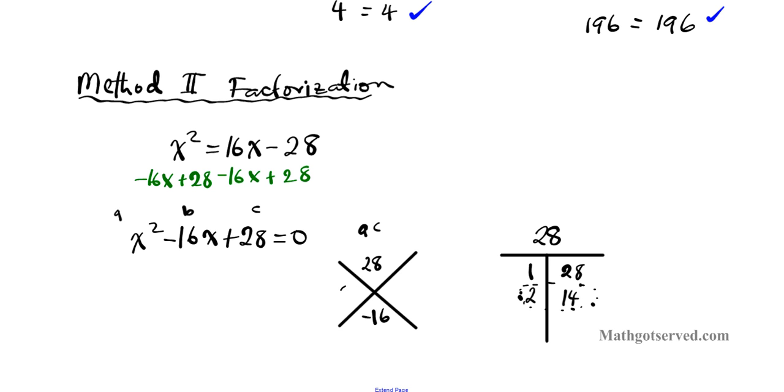I'm going to put 2 and 14 now. Let's resolve the signs and see if it works. Since the product is positive and the sum is negative, that means both of them must be negative. So I'm going to put that in here. x squared minus 2x minus 14x plus 28 equals 0. We're going to break it down, factor by grouping.